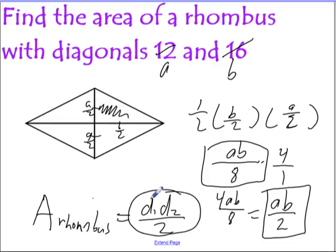So when you have information about the diagonals as opposed to the base and height, when we're talking about a rhombus, much easier way to find the area.